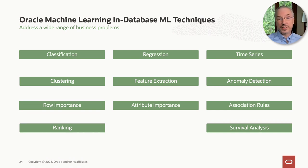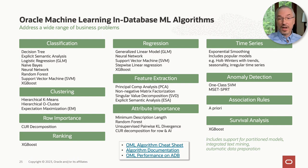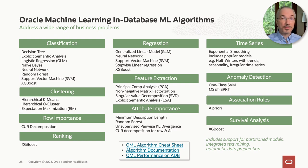Oracle Machine Learning in the database supports classification, regression, clustering, anomaly detection, association rules, and other techniques. For each technique, OML supports several algorithms. Why multiple algorithms? Some are better at finding certain types of patterns. Some offer greater transparency to understand those patterns. Each has its own computational demands — some are faster than others. For details on algorithm performance characteristics, refer to the documentation link shown here.